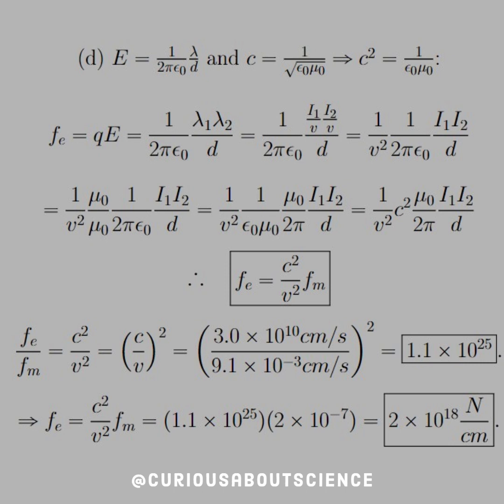And we have 1 over v squared times 1 over epsilon naught mu naught, which we can see why we have that. And then we have mu naught over 2 pi times I1 I2 over D. That look familiar?